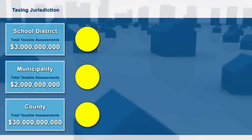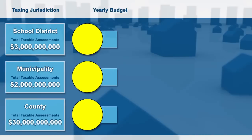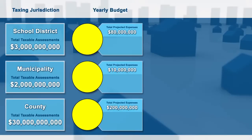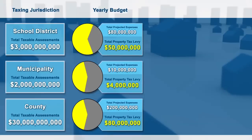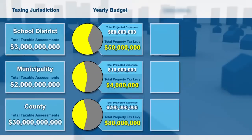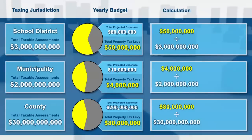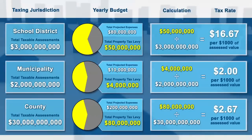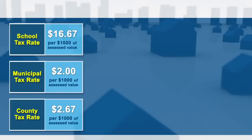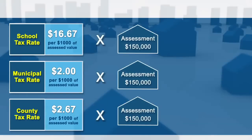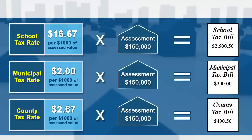They determine their budgets, the total projected expenses for the year, and then subtract all revenues from sources other than the property tax. The result is the levy — the total amount of property taxes to be collected. The tax levy is then divided by the total assessed value of the jurisdiction to arrive at the tax rate. Ultimately, your assessment will be multiplied by the tax rate to arrive at the property taxes you owe.